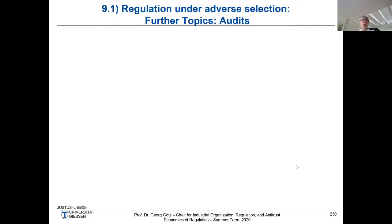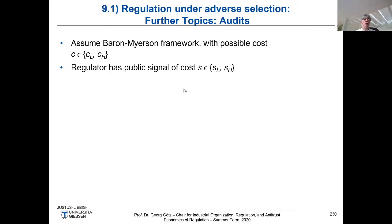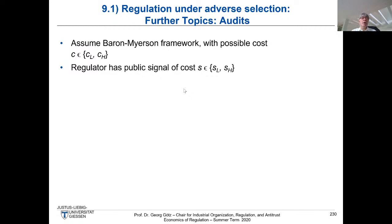We again assume the Baron-Myerson framework with possibly high or low cost, unknown to the regulator. What could the regulator do? The regulator could send an auditor to the firm — a Wirtschaftsprüfer — and the auditor comes up with a report telling you that the firm's cost are actually high or low. In formal terms this is called a signal, and it is a public signal observed both by the regulator and by the regulated firm. If the auditor reports low cost, we get signal SL; if high cost, signal SH.